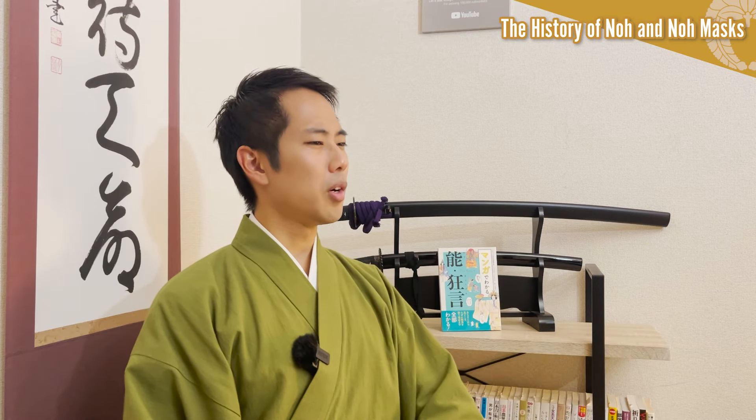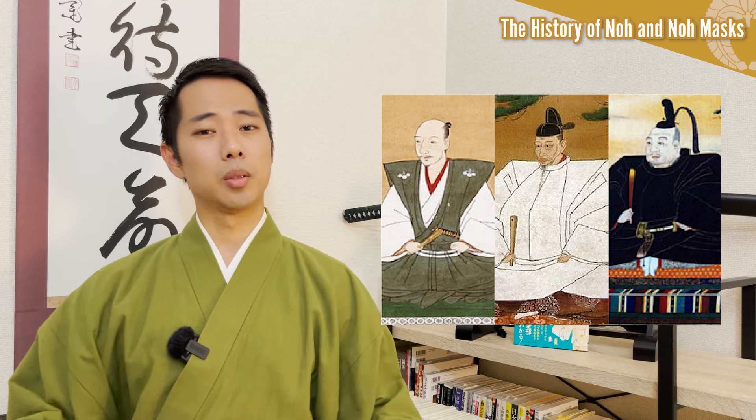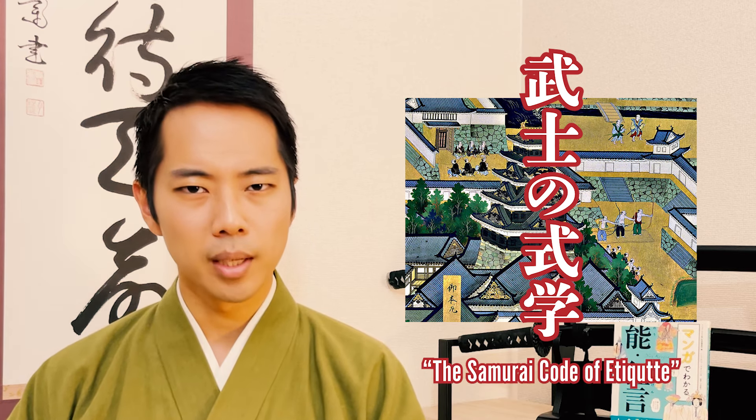Since then, no-theater had continued to win the patronage of the samurai leaders of each era, and the famous Oda Nobunaga, Toyotomi Hideyoshi, and Tokugawa Ieyasu are all known to have cherished the art. Toyotomi Hideyoshi is famous for loving no-theater so much that he played in it himself. During the Edo period that Tokugawa Ieyasu established, no-theater was considered to be Bushi no Shikigaku, meaning the samurai code of etiquette.